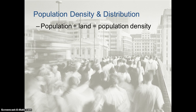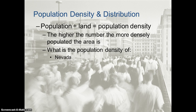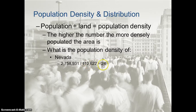Population density is measured by taking the population and dividing it by the land area of the size you're measuring, and you get population density. The higher the number, the more densely populated the area is. What is the population density of Nevada? We take the entire population of Nevada — 2.7 million people — divide it by 110 thousand square miles, and we get a population density of just 24 people per square mile in Nevada.